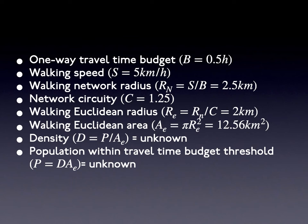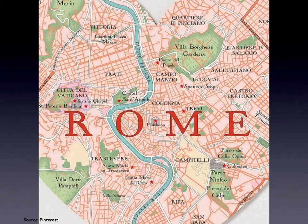Let's illustrate with some assumptions. One-way travel time budget b = 0.5 hours. Walking speed s = 5 km/hr. Walking network radius r_n = s × b = 2.5 km. Network circuity c = 1.25. Walking Euclidean radius r_e = r_n / c = 2 km. Walking Euclidean area potential A_e = π × r_e² = 12.56 km². Density d = P / A_e (unknown). Population within travel time budget threshold P = d × A_e (unknown).